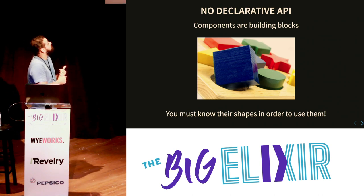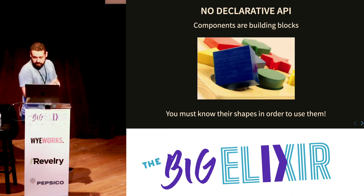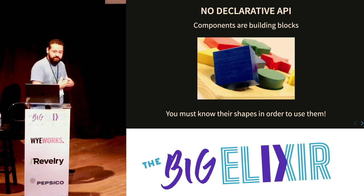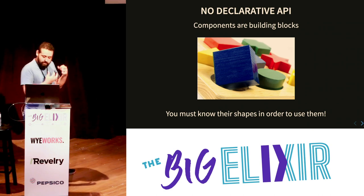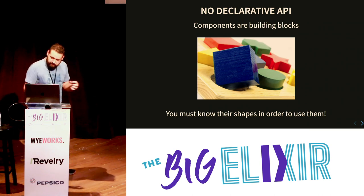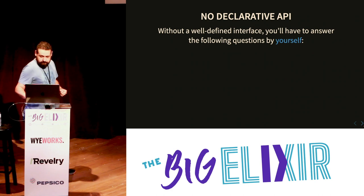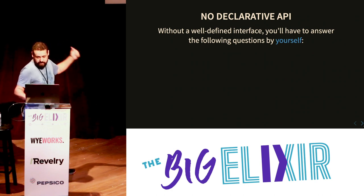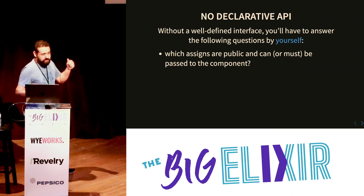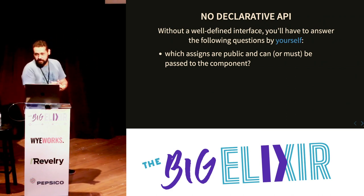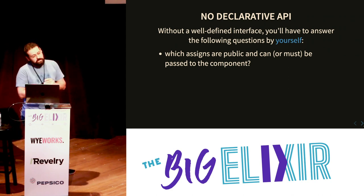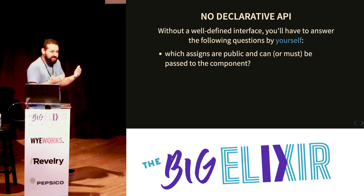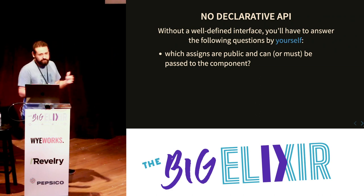The third missing part was the lack of a declarative API. When we talk about components — components are building blocks, and it's hard to get those building blocks together if you don't know their public interface. If you want to use a component, it's important to actually know the shape of those components so you can put them together. Without the declarative API, I remember whenever I was in a LiveView template, I saw all those assigns and had to ask questions, especially if the component was designed by someone else — I had no idea what was going on.